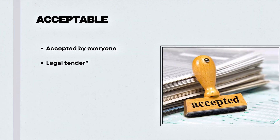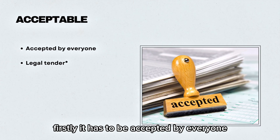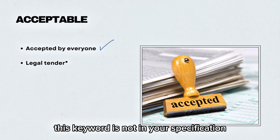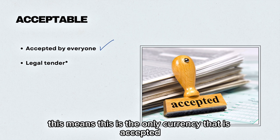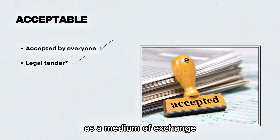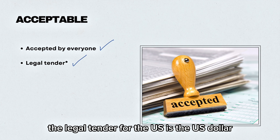Moving on to the characteristics of money. Firstly, it has to be accepted by everyone. Countries will have their own currency as legal tender — this means this is the only currency that is accepted as a medium of exchange. For example, the legal tender for the US is the US dollar.